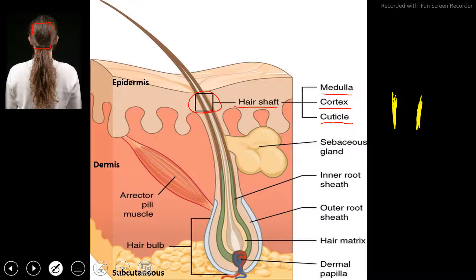That's this part of the hair. Then we have the cortex, which is the next layer of the hair. Then lastly in the hair shaft, we have the medulla. The medulla is in the middle.